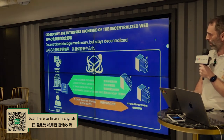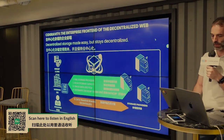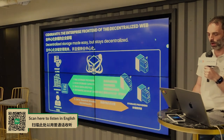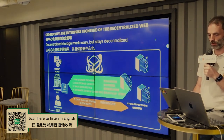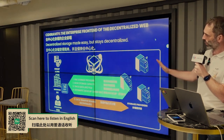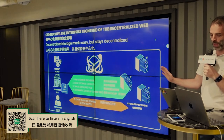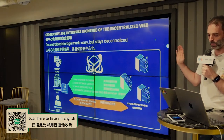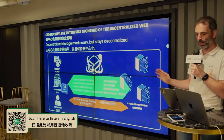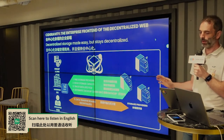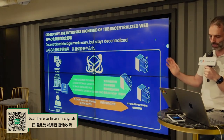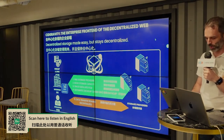They need small integration costs — seamless integration — and it's also difficult in the decentralized web to find the right storage partner. So what CID Gravity is, is a front-end for enterprise to the decentralized web. When we say front-end, we want to make decentralized storage easy, but we want to keep it decentralized — not be another centralized product.